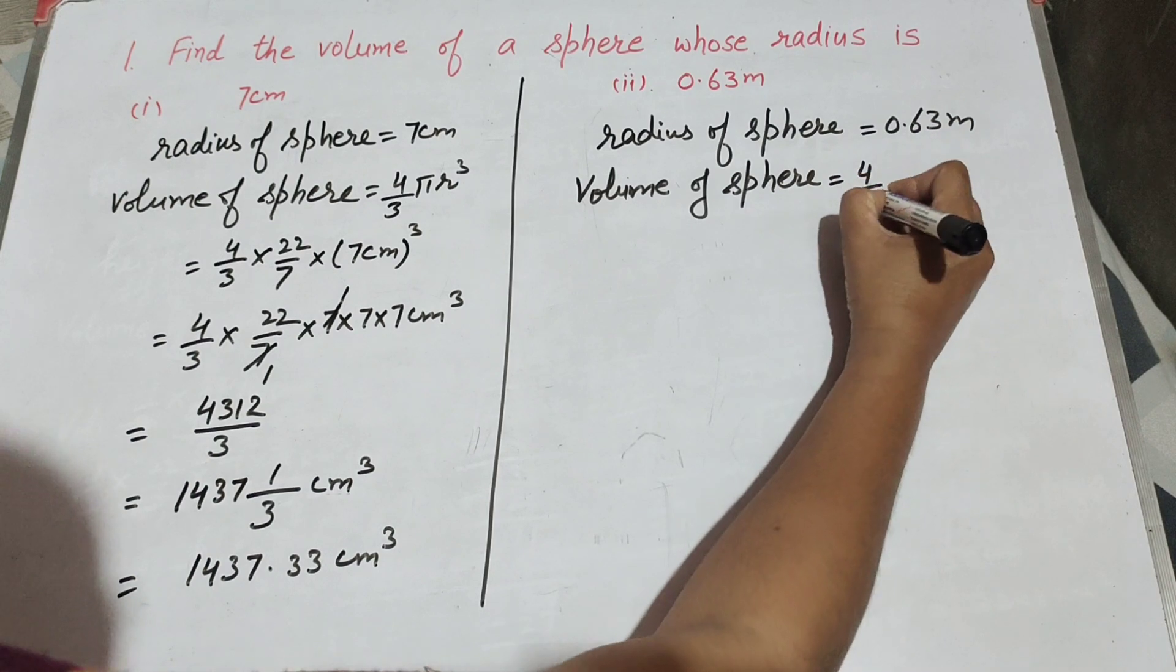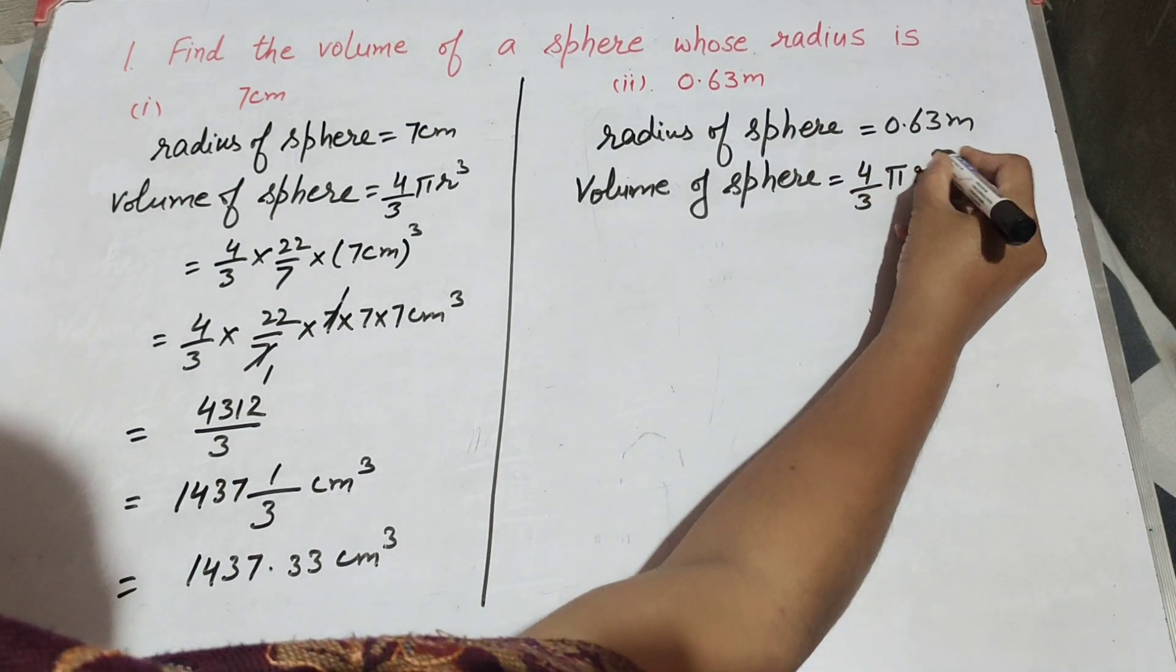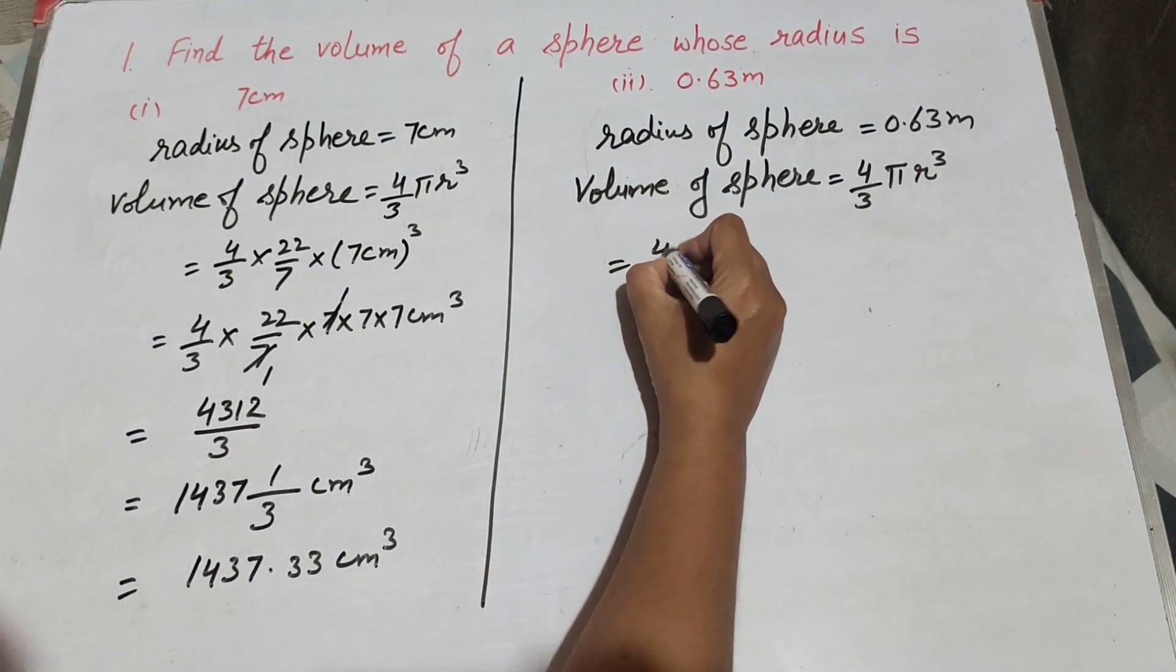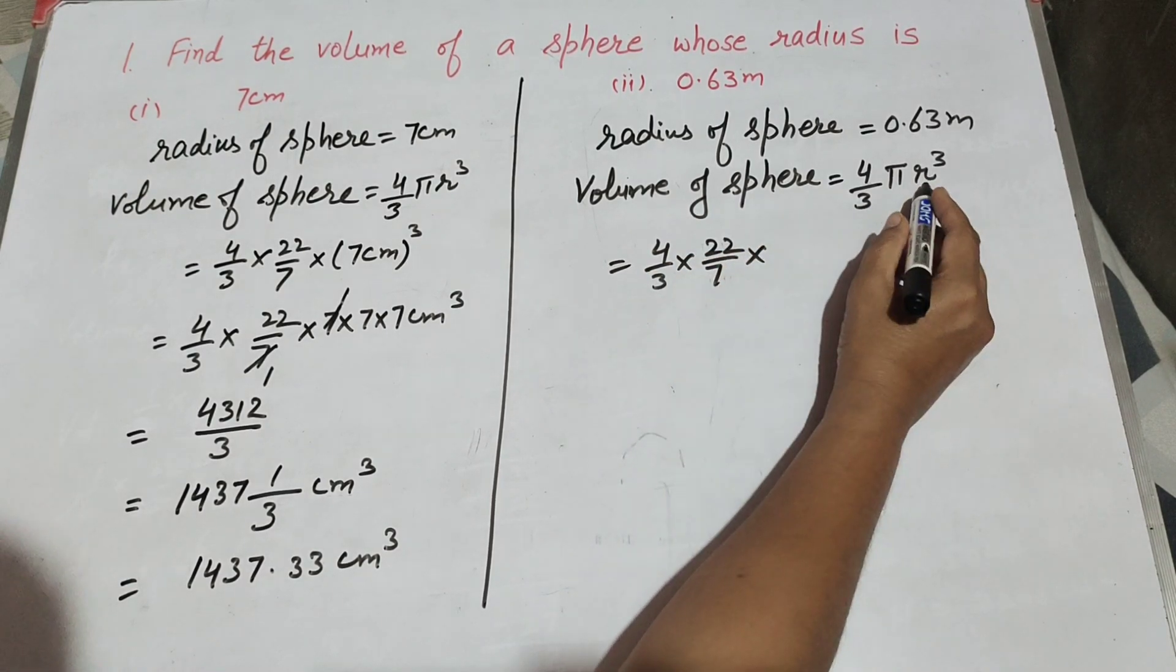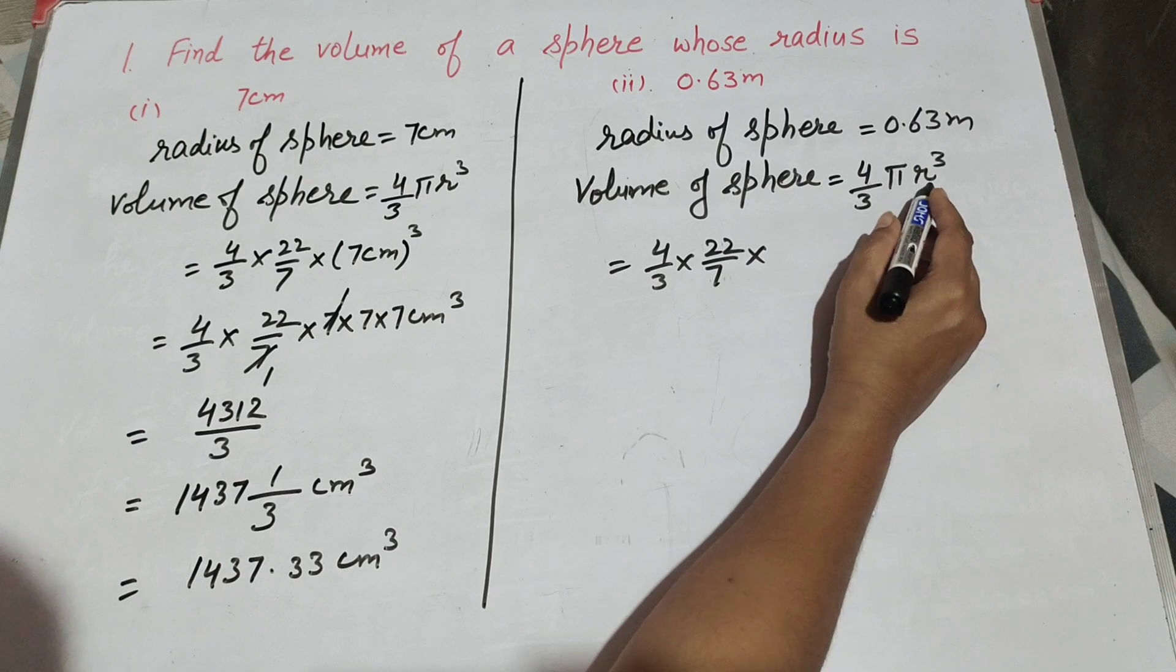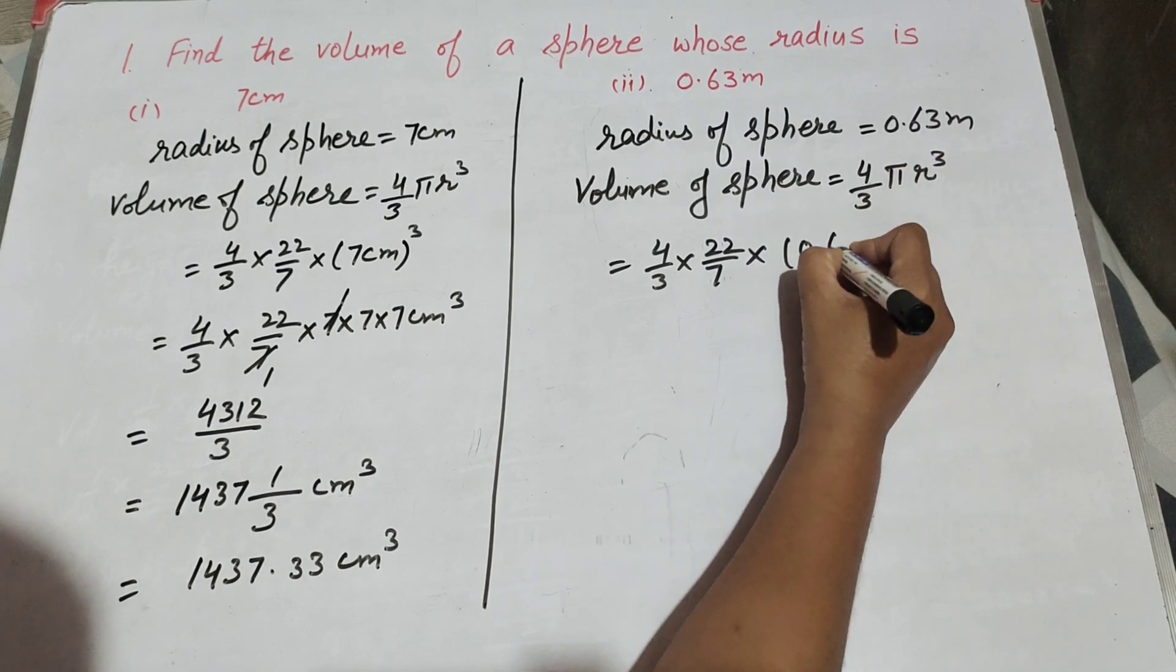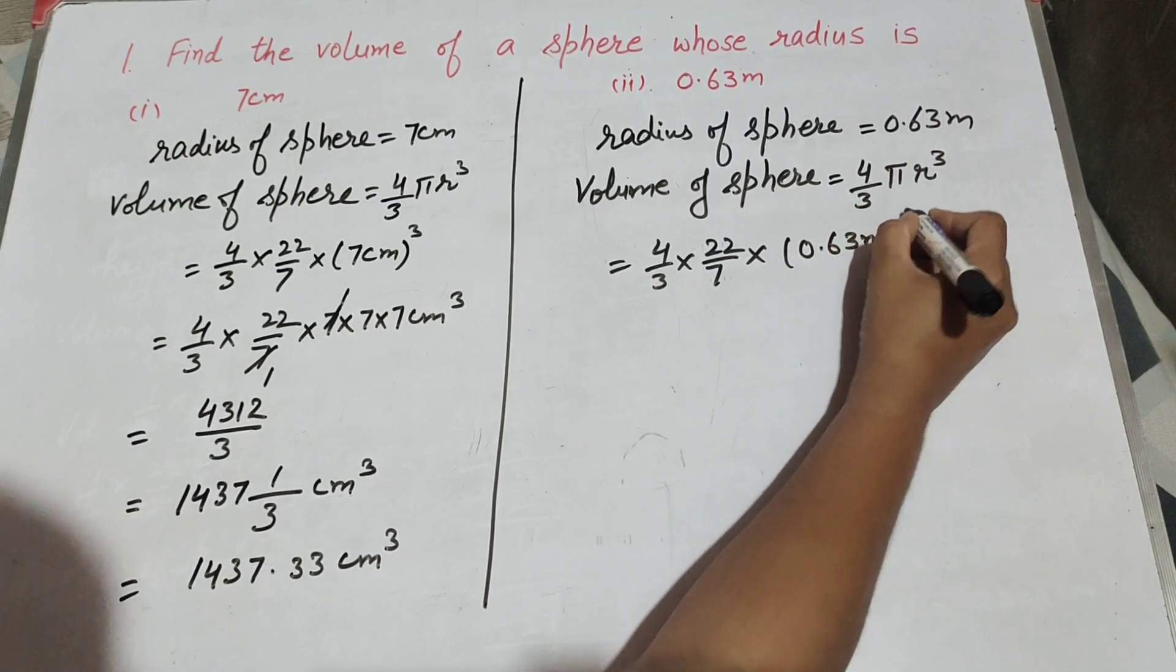It is equal to 4 over 3 pi r cube. This is the formula that we use to find volume of sphere. 4 over 3 pi, its value is 22 over 7, and r cube, r is radius, and radius is 0.63 meter cube.